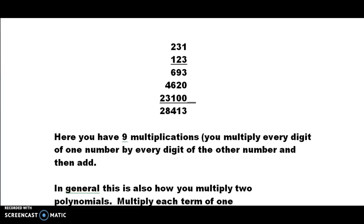Taking 231 times 123: we take the 3 of the 123 and multiply it by each digit on the top row. So 3 times 1 is 3, 3 times 3 is 9, and 3 times 2 is 6. Then we go to the next digit, the 2, and multiply it by each one on the upper row — I put a 0 on my second row as a placeholder. On the third line we take 231 times the 1, which gives us 231. We've taken each of the three terms times the other three terms — nine multiplications total. Then we draw a line and add. Your answer should be 28,413. Three digits times three digits equals nine multiplications, then you add.